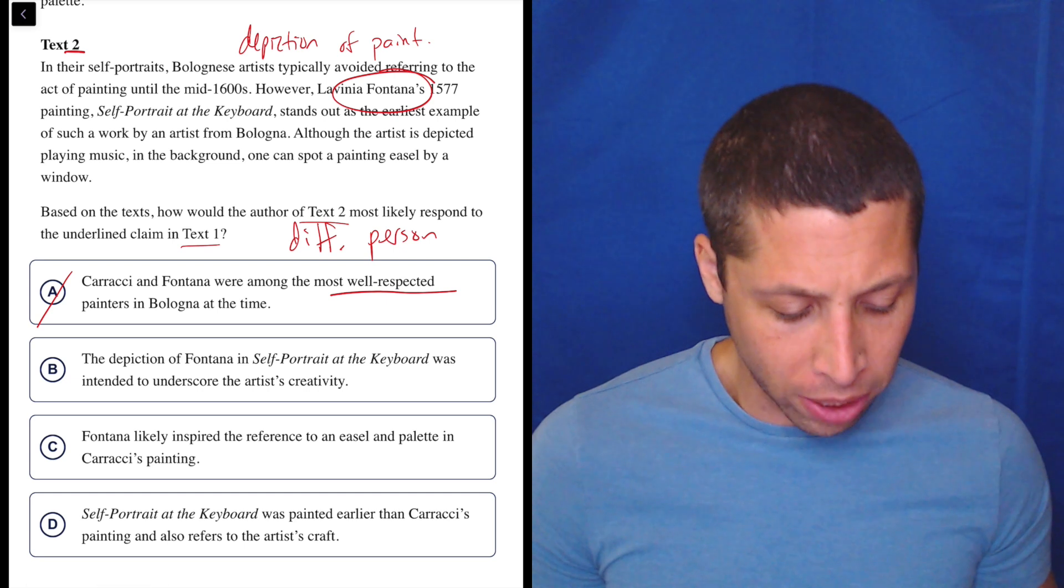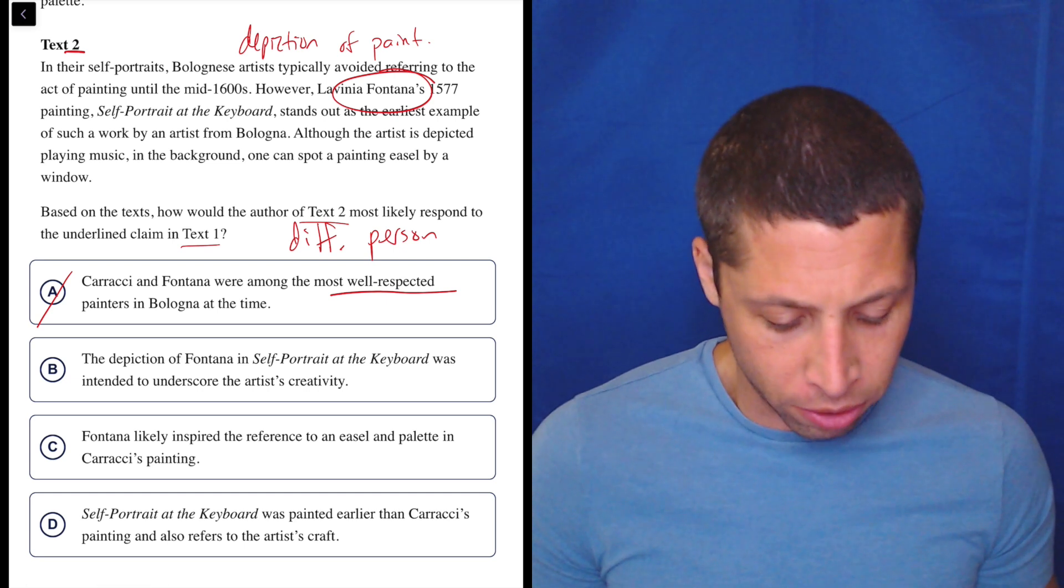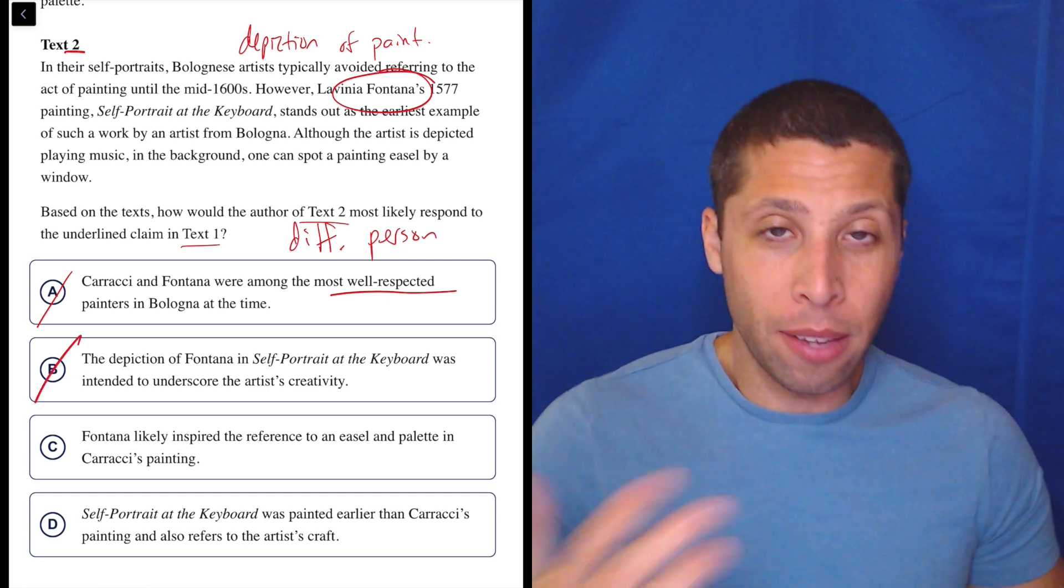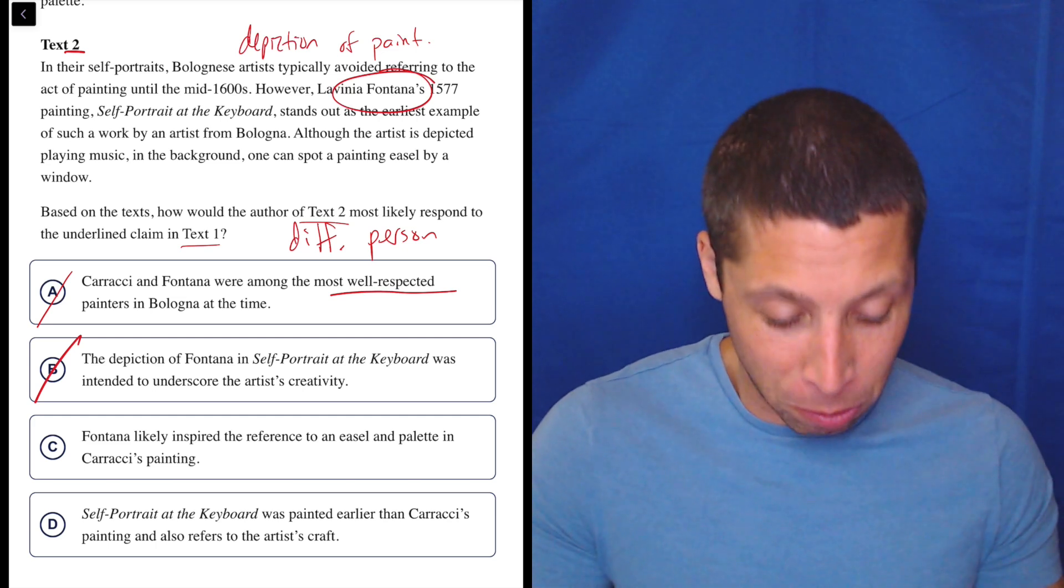B, the depiction of Fontana in self-portrait at the keyboard was intended to underscore the artist's creativity. But yeah, maybe. But the whole point is they have different people that they think are the first person. Let's keep going.